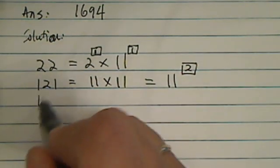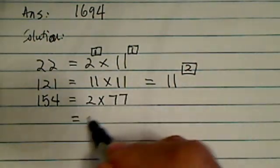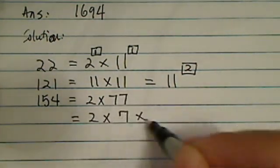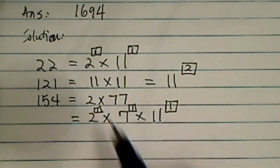One more time. 154 is equal to 2 times 77. That's equal to 2 times 7 times 11. Let's put the hats on again: 1, 1, and 1.